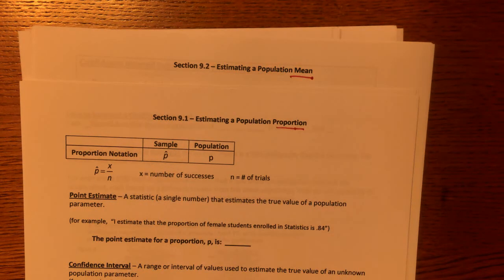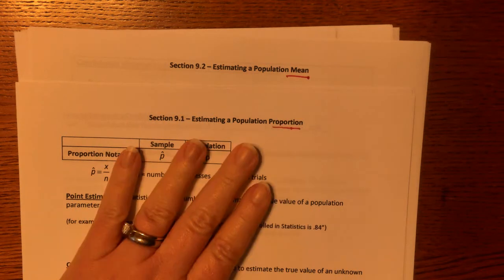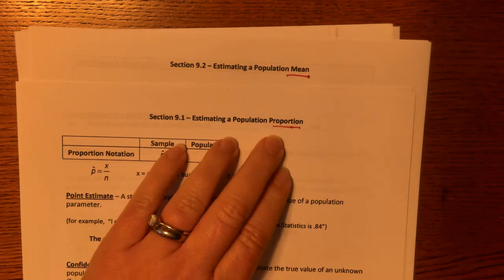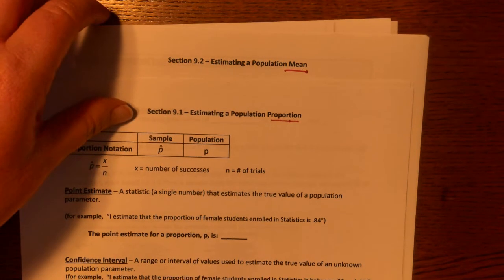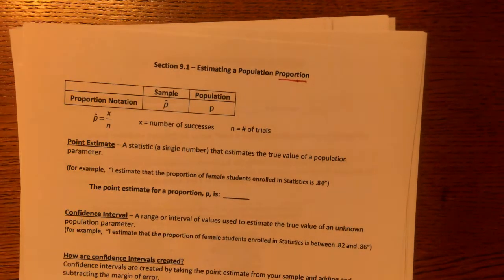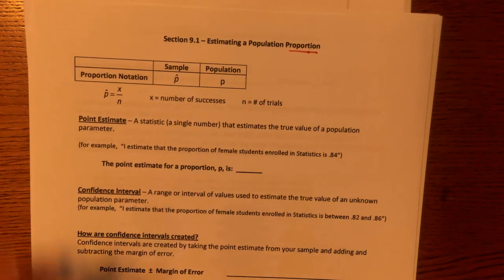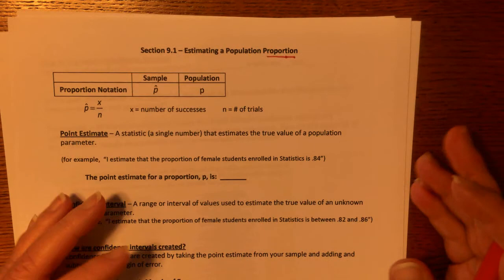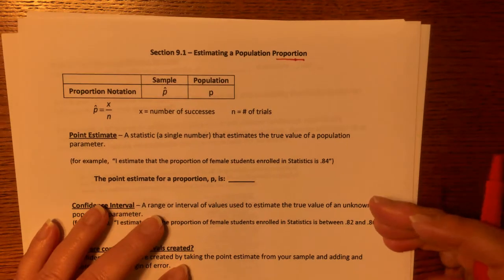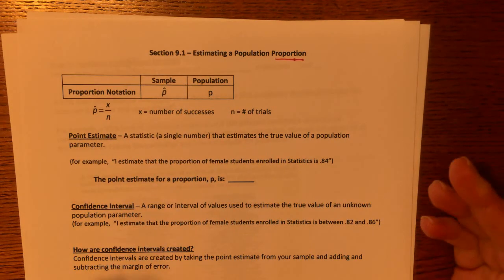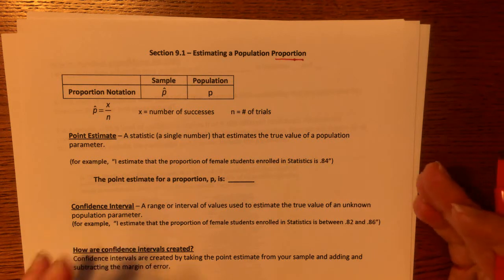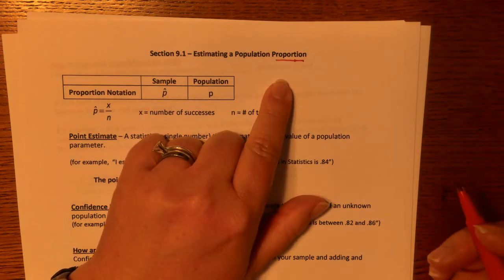The idea of a confidence interval is the same whether it's based on means or proportions, but the process in your calculator will be a little different, and the sentence we write for our conclusion will be slightly different. In 9.1, we are focused on proportions — we are assuming the survey question was a yes or no question, like 'do you like chocolate chip cookies?' or 'do you watch Friends?'